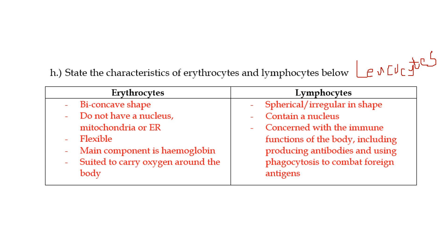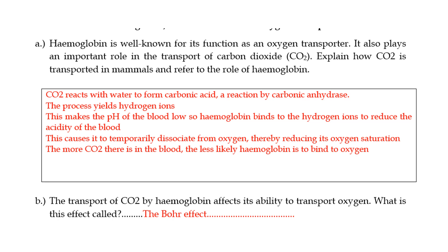The lymphocytes, on the other hand, are more spherical in shape, and sometimes they can be irregular. They do contain a nucleus, and some of them have an endoplasmic reticulum. They are concerned with immune functions of the body. Some of them generate antibodies, which are proteins themselves. And they use phagocytosis to combat foreign antigens. They're all part of the immune system. They have all kinds of functions. There are so many different types of them. But these are some of their characteristics.